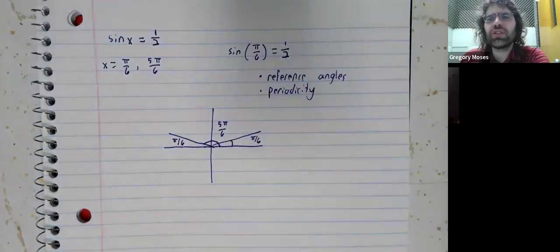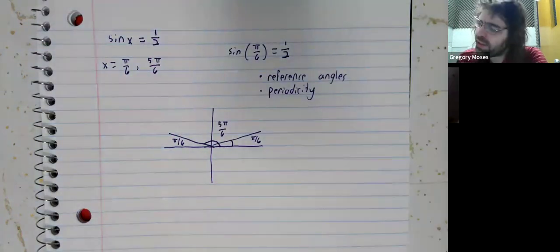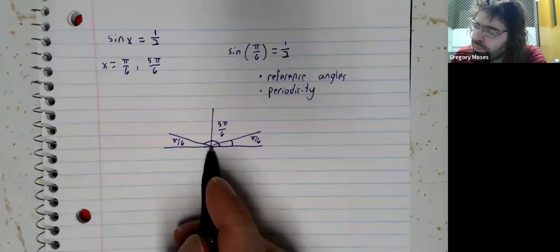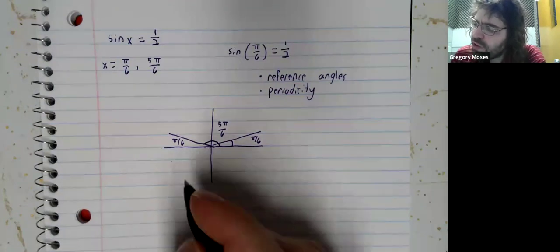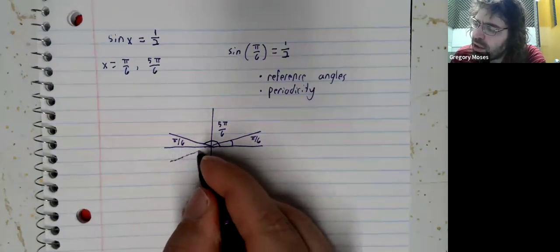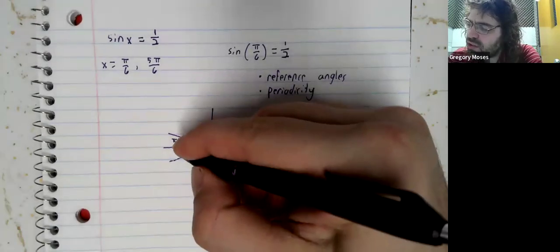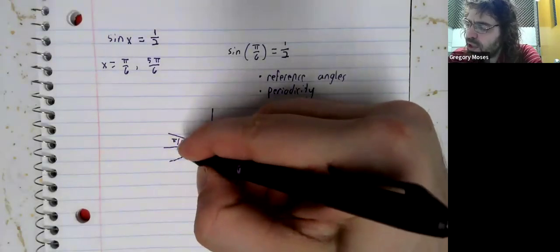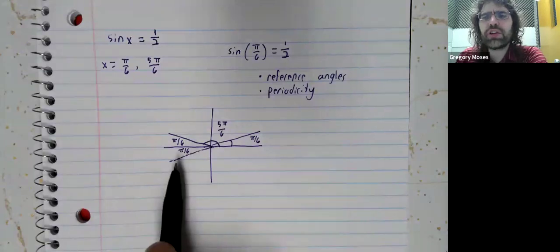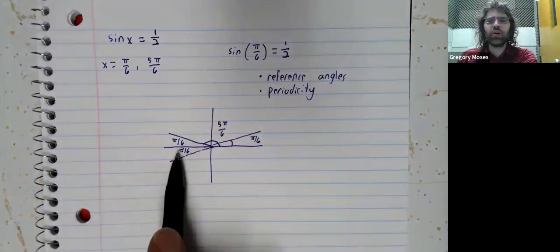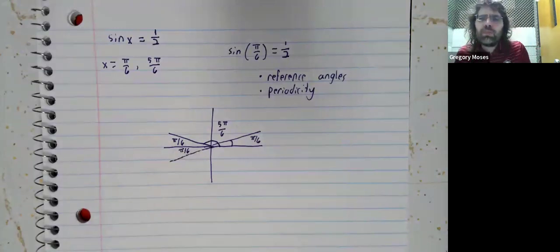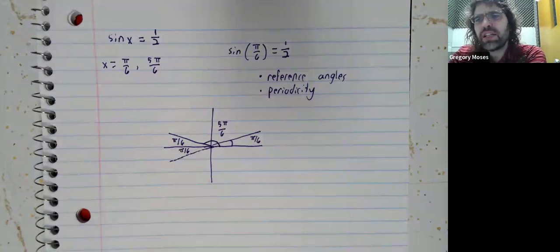You might ask, well, what about seven pi over six? That has a reference angle of pi over six as well. And you're right, it does.